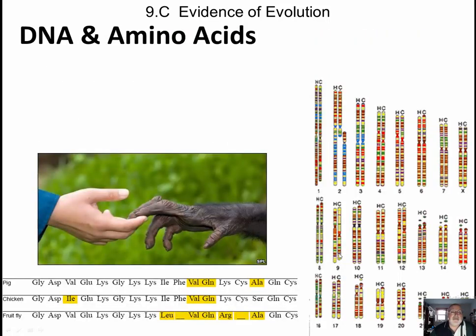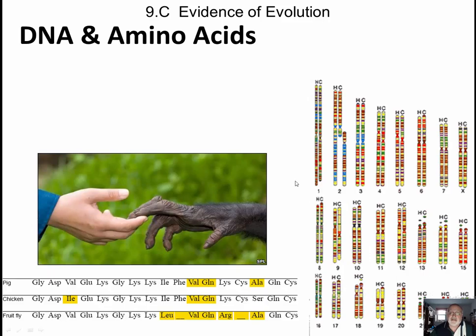Now that we have DNA and amino acids, we can do even more comparisons of similarities. Take a look — we have human and chimpanzees. You look at the chromosomes; they're a little off in color but still very, very similar. DNA and amino acids are compared between two different species. The more DNA and amino acids they share, as well as position, the more closely they are related.